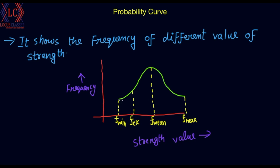If we look at the test results, what is FCK? The frequency shows the number of cubes at each strength value. If you look at the number of cubes, you can see how as the strength is reduced, the number of cubes is also reduced.